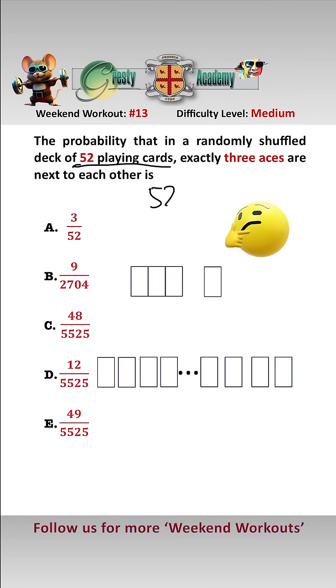There are 52 playing cards which means there are 52 factorial ways of arranging them and we want exactly three aces together. So let's put the three aces together here.